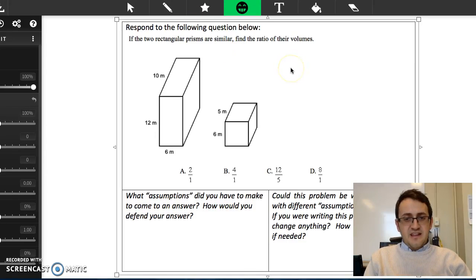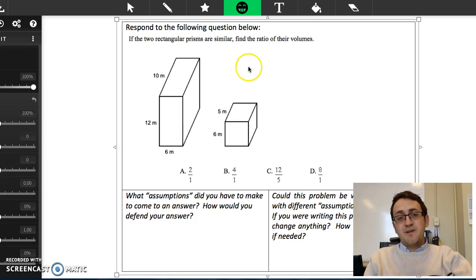Greetings scholars. Today we are going to be looking at an ISTEP slash SAT style problem concerning volumes of rectangular prisms. So this says that the two rectangular prisms are similar. Find the ratio of their volumes.